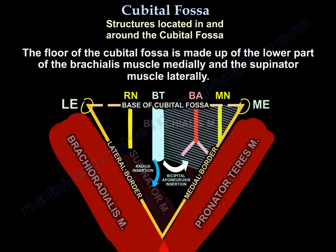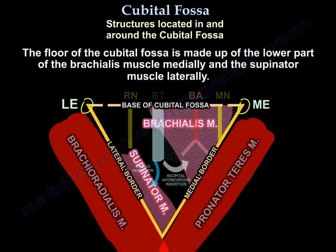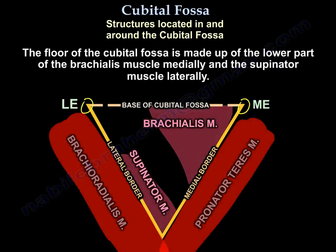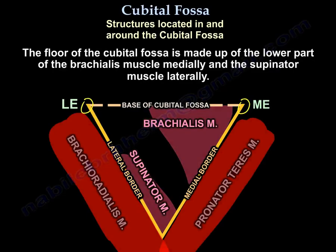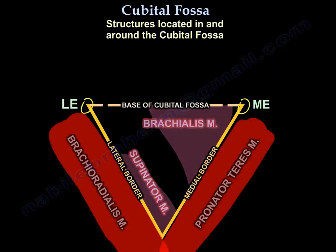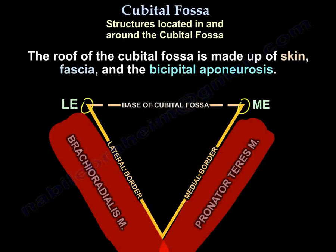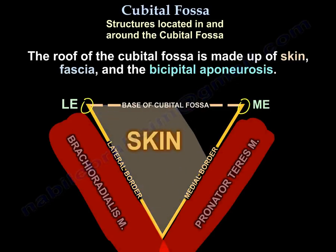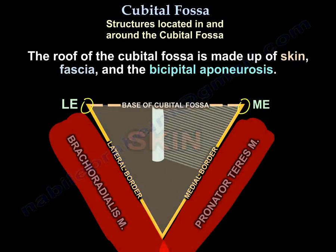The floor of the cubital fossa is made up of the lower part of the brachialis muscle medially and of the supinator laterally. The roof is made up of the skin, the deep fascia, and the bicipital aponeurosis.